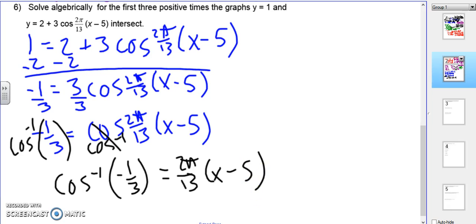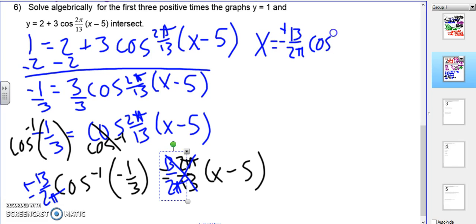So cosine inverse is going to undo cosine. So now we have cosine inverse of negative 1 third equals 2 pi over 13 times x minus 5. Again, we want to get rid of the number on the outside. So we're going to reciprocal it, multiply by the reciprocal. So these cancel. And then we've got to put a plus and minus in front because we're doing cosine. And cosine is negative in quadrants 2 and 3. So it gives us both rotations. Last step, we're going to add the 5.